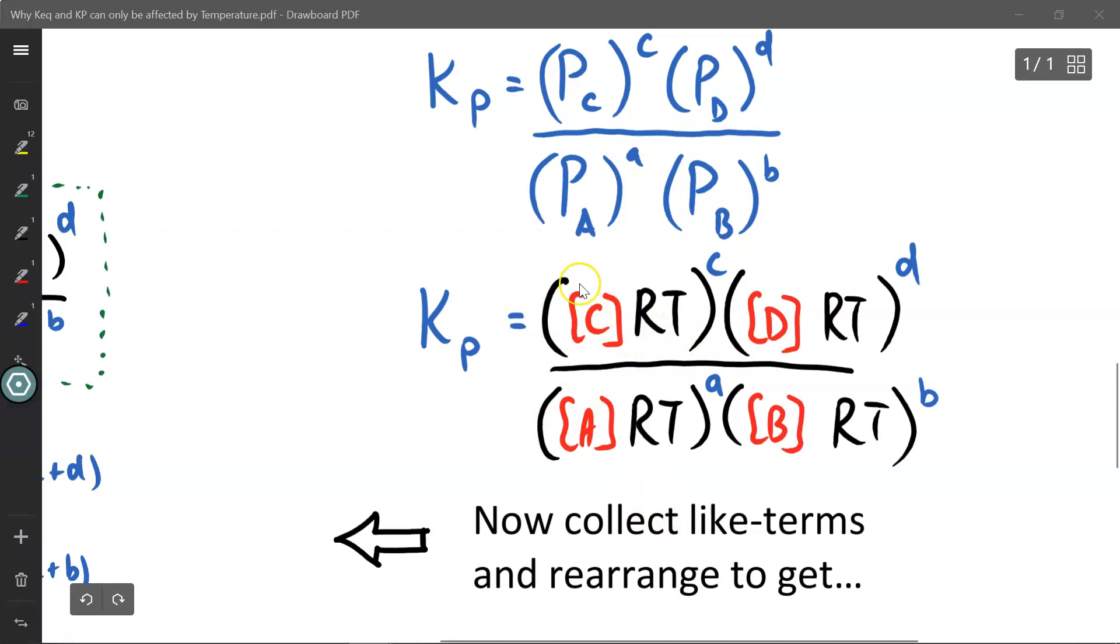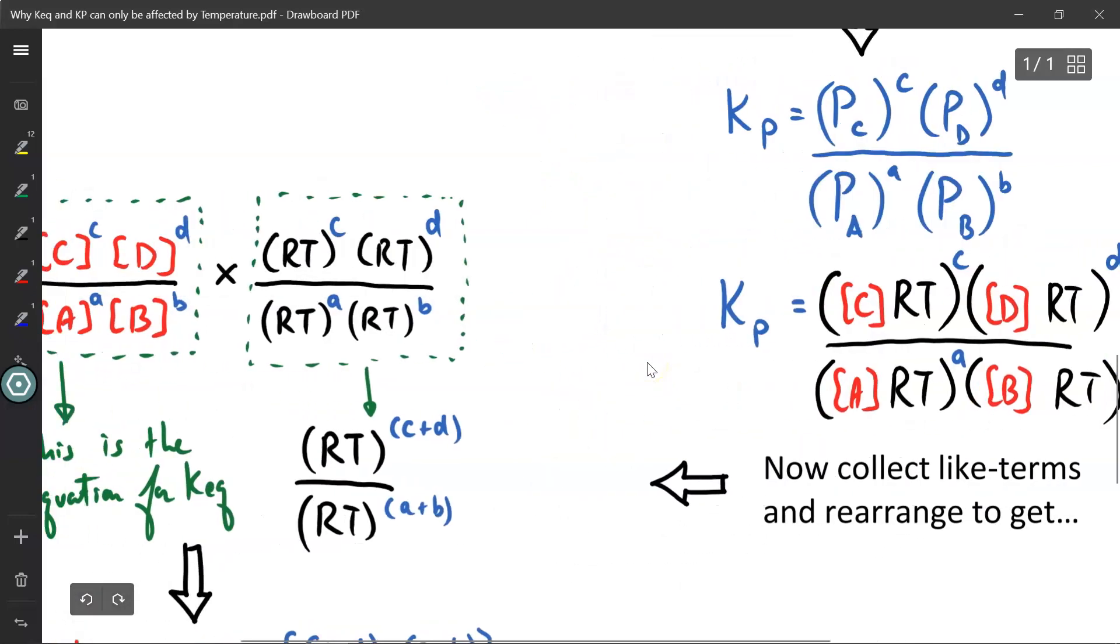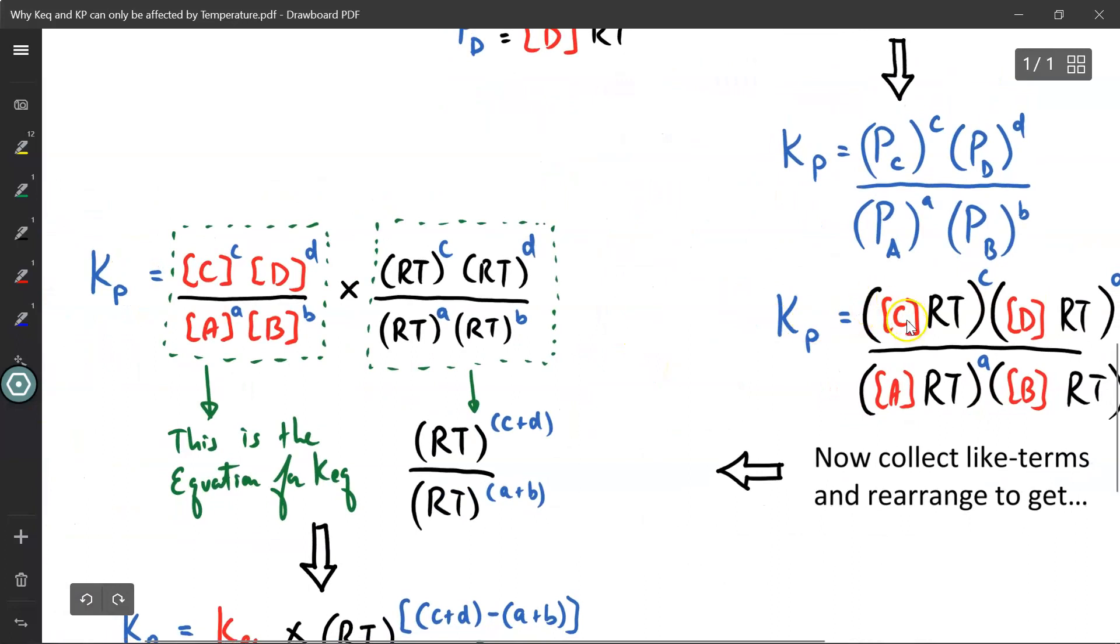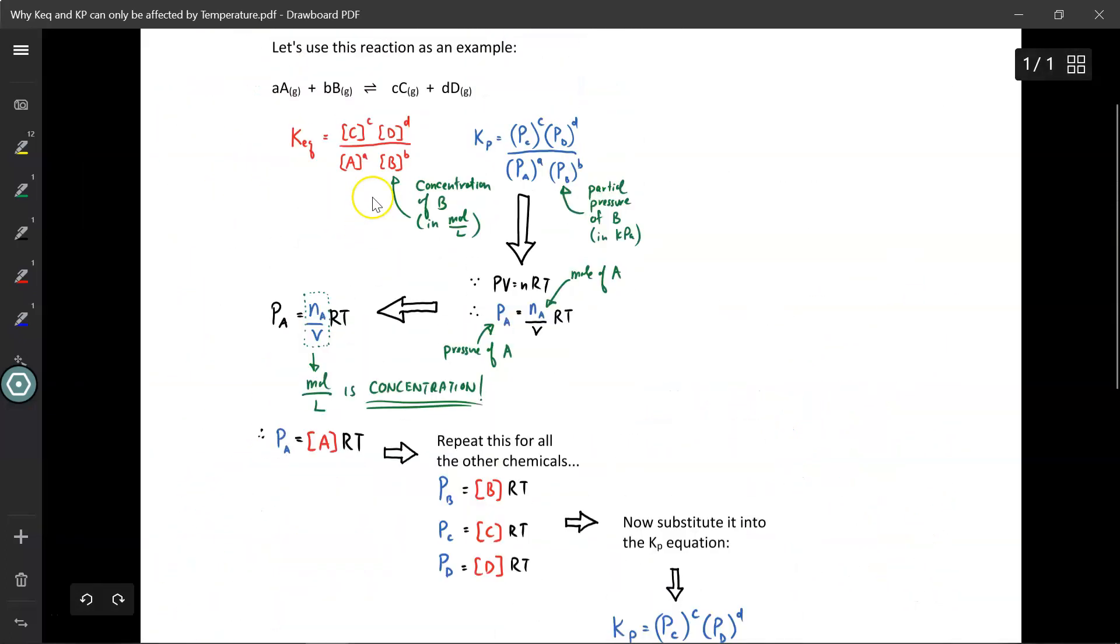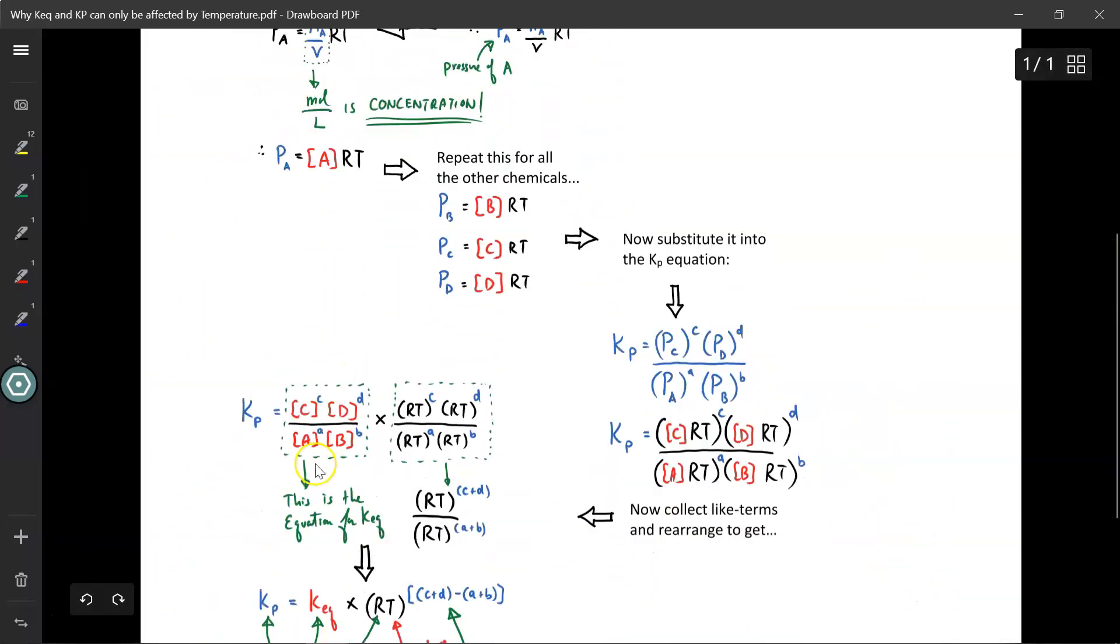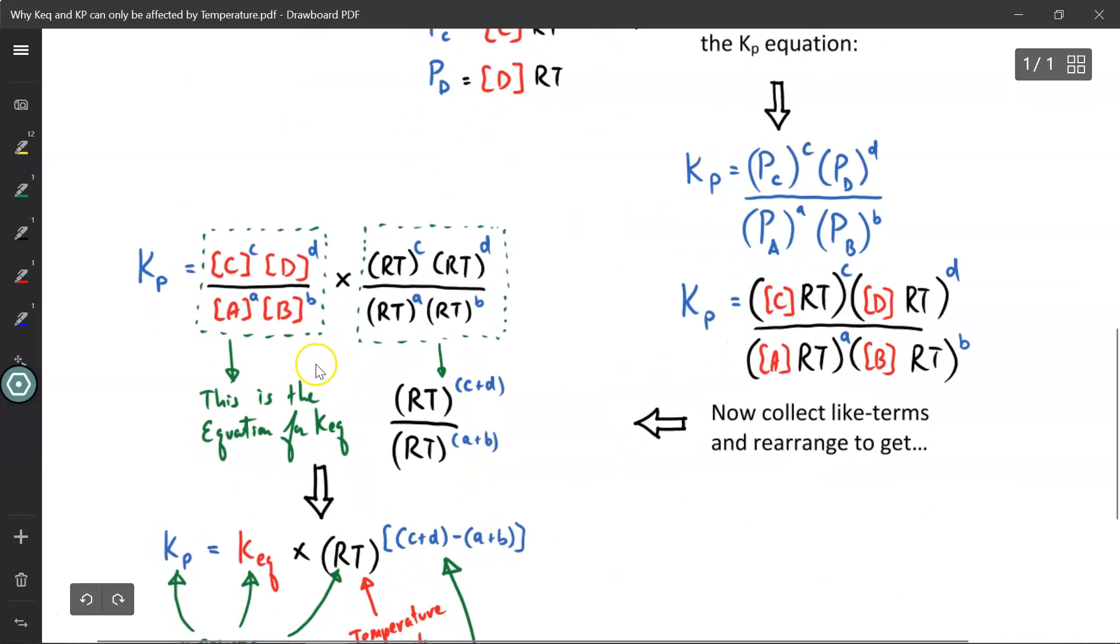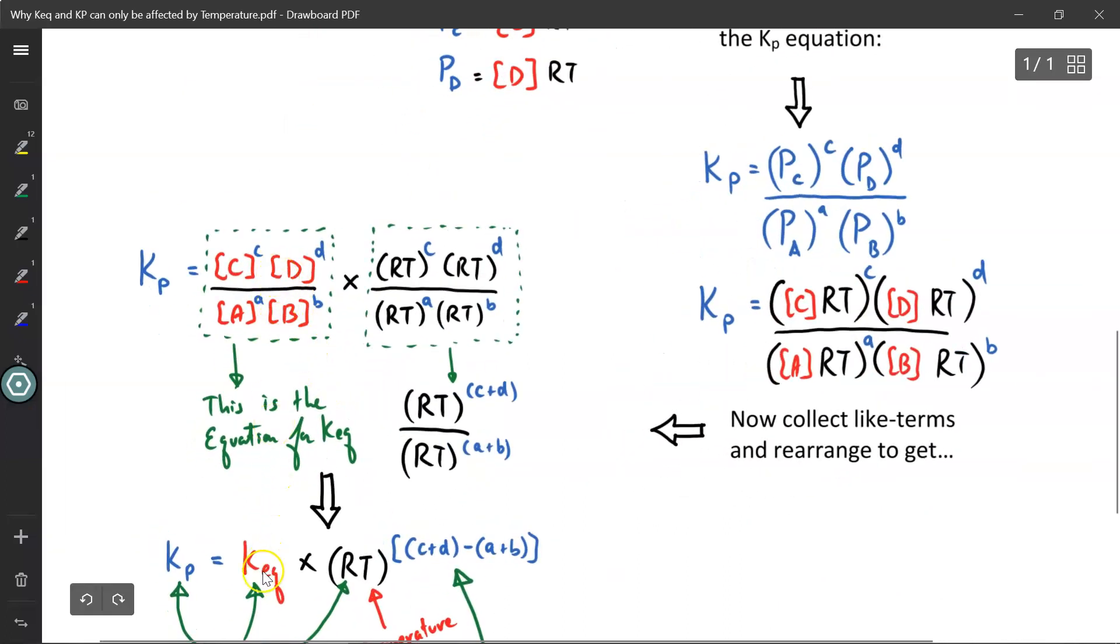What I'm going to do now is collect some like terms and rearrange the equation. When I do so, I get this over here. I'm going to take out all the C's, D's, A's, and B's, and put them over here. I've just expanded it, taken out the exponents, and I've left RT on its own. Now if you recall, this over here looks a lot like the equation for Keq. If you take a look back over here, up at the top, that's the equation for Keq. So I can further simplify this and make it Keq.